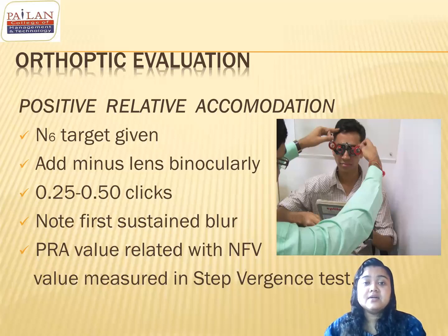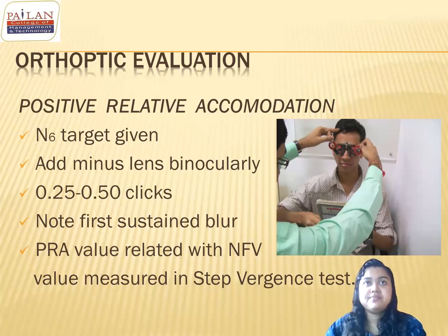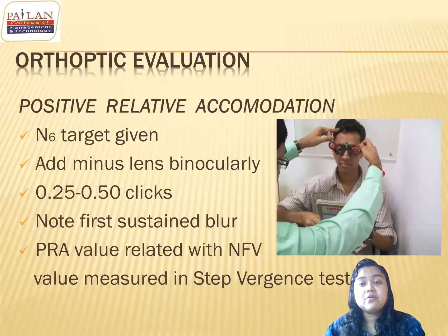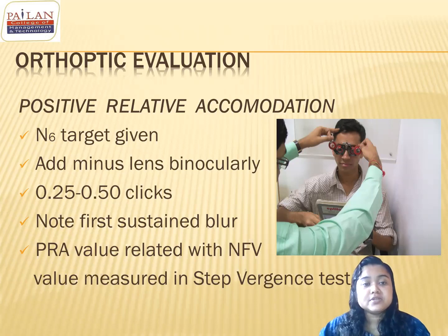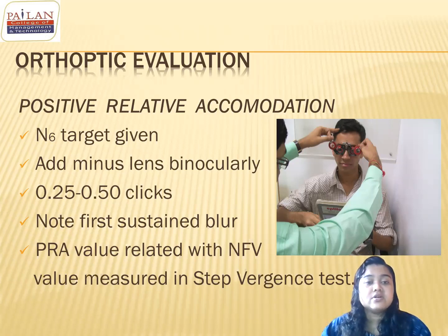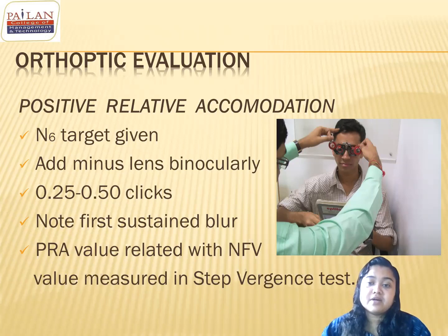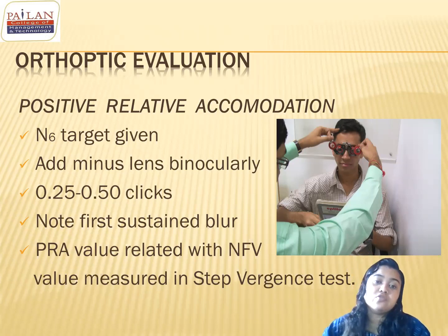If the PRA value is less than -2.5 diopter, the patient cannot stimulate accommodation properly. If you get a lesser PRA value along with a lesser amplitude of accommodation, the patient might have accommodative insufficiency — that may be the problem.